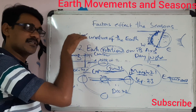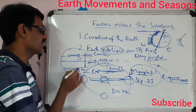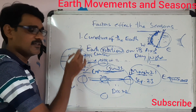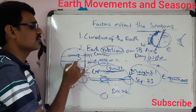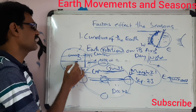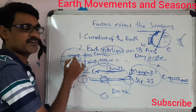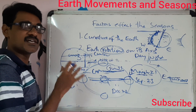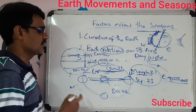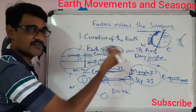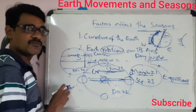After December 22nd, the sun starts its journey from Capricorn back toward Cancer, reaching the equator on March 21st, and then reaching the Tropic of Cancer by June 21st. This journey of the sun causes the seasons. Earth's revolution and the tilting of the earth's axis are the main factors for the occurrence of seasons.